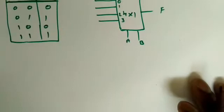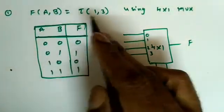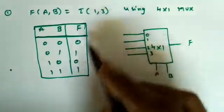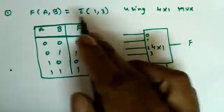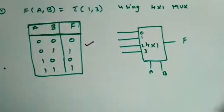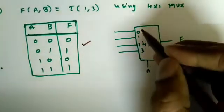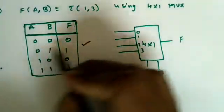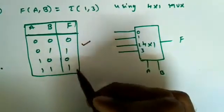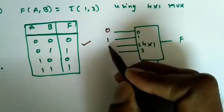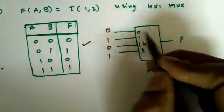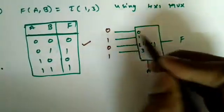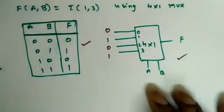Let's look at an example. Consider the two-variable function F(A, B) = Σ(1, 3). This means the function value is high at positions 1 and 3. Drawing the truth table first, then the block diagram: A and B are the select lines, and we assign the function values directly to the inputs — 0, 1, 0, 1. Whenever select combination 00 is chosen, it selects input I0 which holds 0; for 01 it selects I1 which holds 1, and so on.